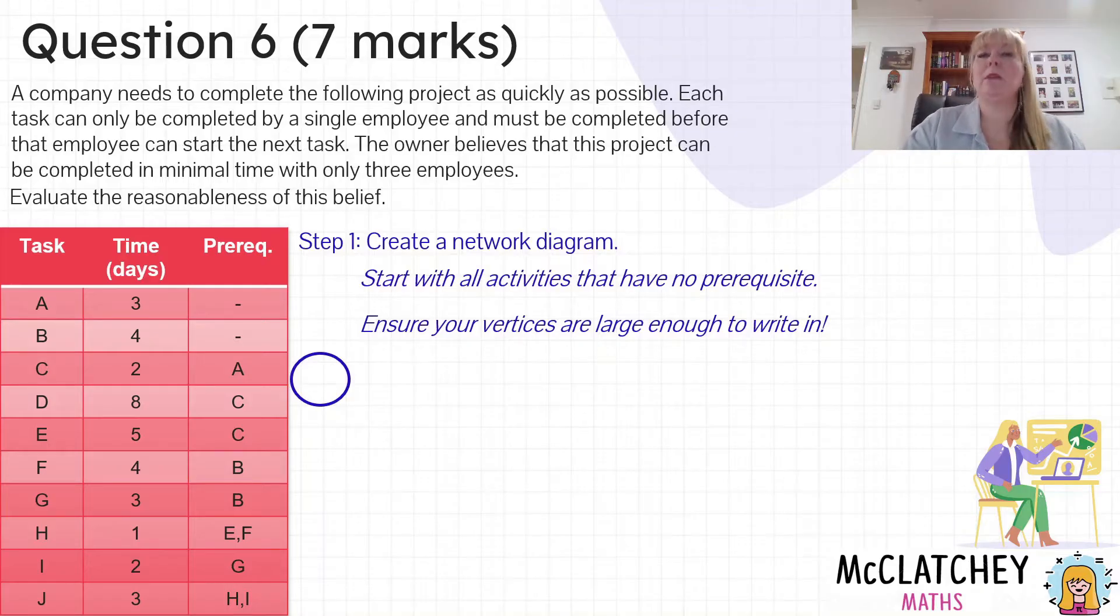If you try and write all that inside the bubble as well as forward scan and backward scan, you are in for an absolute mess. So follow this video and watch what I'm doing. We're going to start with all our activities that have no prerequisite. You can see that's activity A and activity B. They are both coming out of our starting vertex.